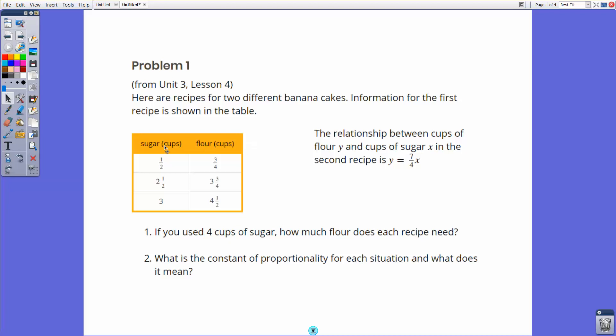You have two different recipes. One recipe is shown here as a relationship from sugar to flour based on the banana cakes. And then you have another one for a recipe that has a relationship that's written as a proportional equation. So y equals seven fourths x is one, and then meanwhile here you have pairs of sugar and flour that work for this recipe. So what you're supposed to do here is you're supposed to figure out ultimately, if you use four cups of sugar, how much flour do you need for each one?